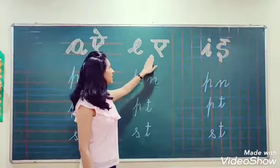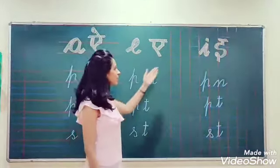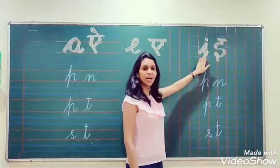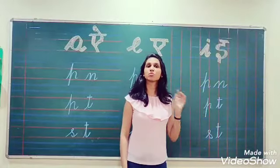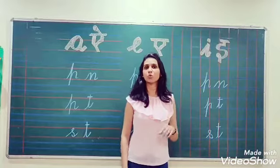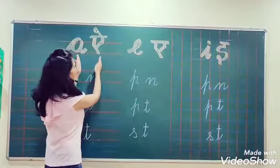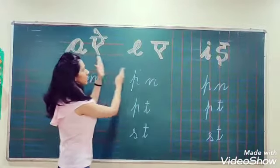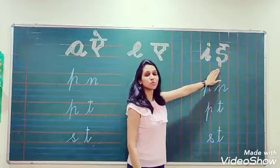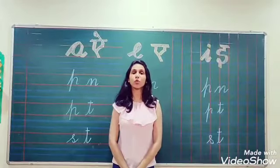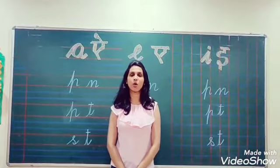But E says 'eh' — it is a small sound. Next we have I. I says 'ee' — it is the smallest sound. So if you compare: A is the bigger sound, E is a small sound, and I is the smallest sound. You have to recognize these sounds like this.